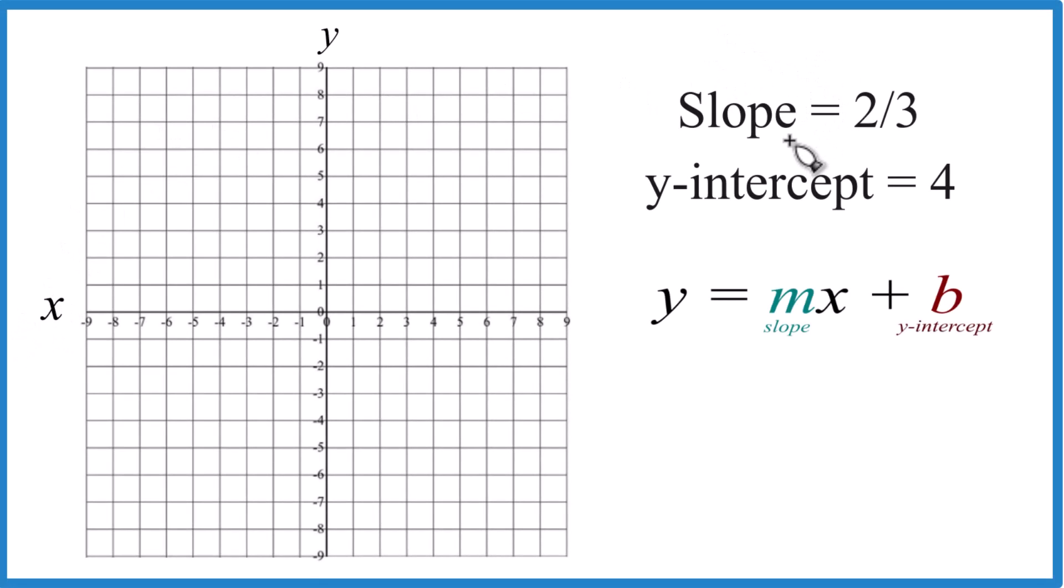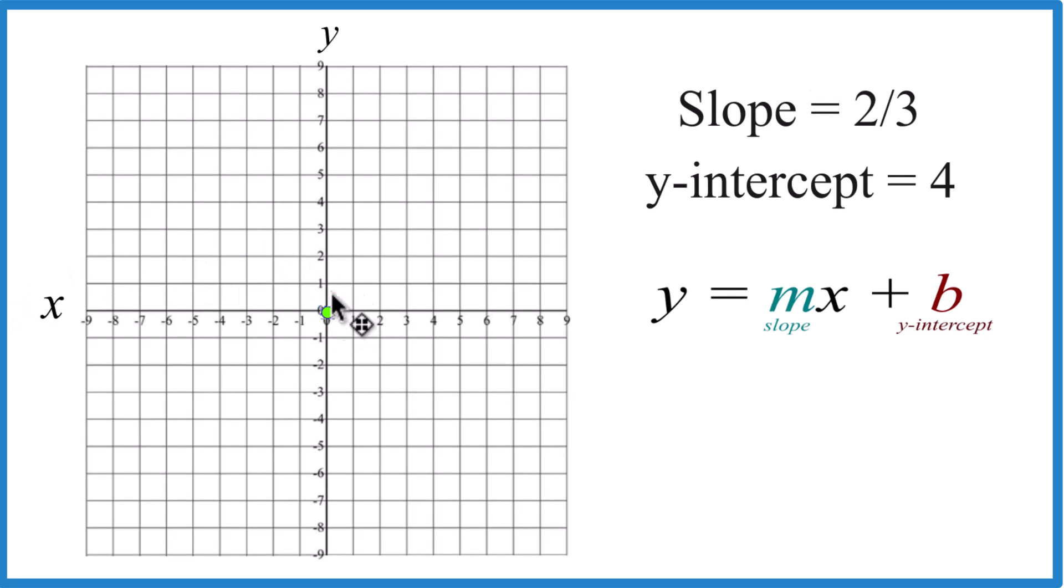So let's write the graph where we have a slope of two-thirds and a y-intercept of four. So that y-intercept of four, that's where we'll start. So we go to the y-axis, we find four right here. That's where we're going to cross the y-axis.